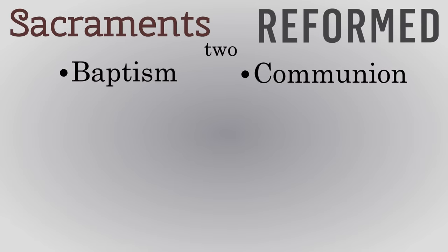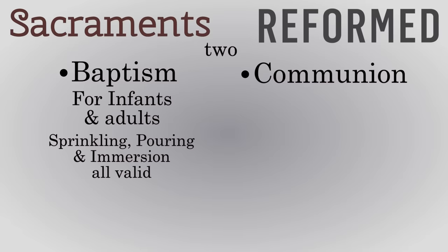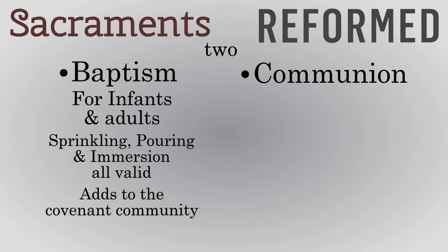Reformed and Presbyterian churches hold to only two sacraments: baptism and communion. Like Lutherans, infants of church members are baptized as well as adult converts who were never baptized. Sprinkling is a common mode, but pouring and immersion are also acceptable. The connection between baptism and salvation is trickier in the Reformed view — not all who are baptized get saved, and those unbaptized are at no risk in their salvation because of it. However, the sacrament does bring the infant into the covenant community of the church; it confers grace, but the efficacy is not tied to the time the baptism is performed. The body and blood of Christ are said to be present in the elements of communion, but in a spiritual manner.